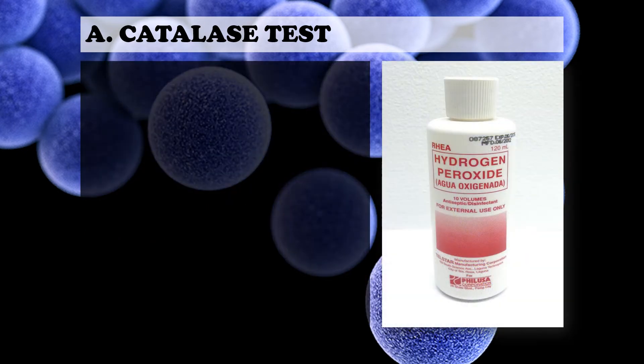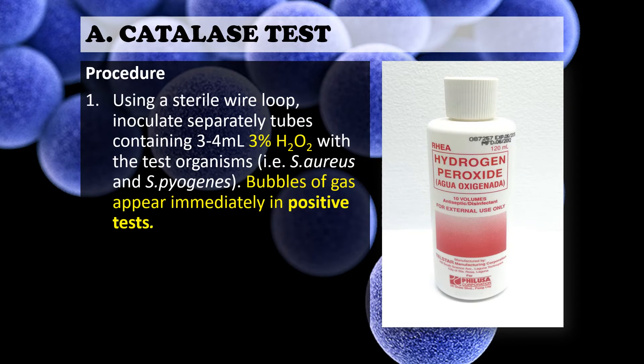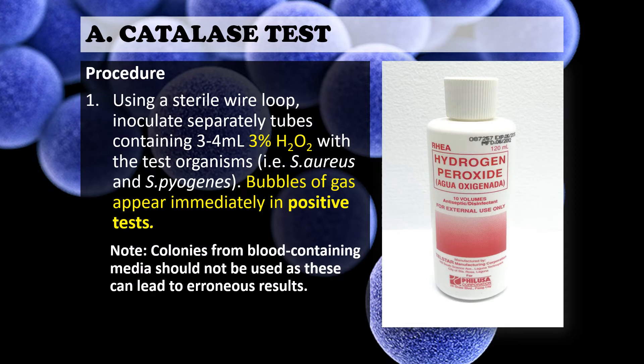For the procedure, we need a 3% hydrogen peroxide solution. This hydrogen peroxide, or agua oxenada, is commercially available in drug stores and may also be used for the catalase test. First, prepare your tubes containing 3 to 4 ml of 3% hydrogen peroxide, then aseptically transfer your organism using a sterile wire loop. Bubbles of gas appear immediately in a positive test. Take note that colonies from blood-containing media should not be used as this can lead to erroneous results.